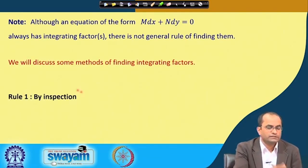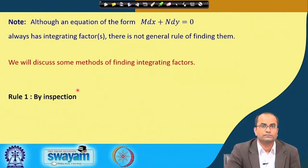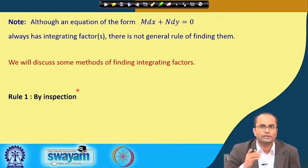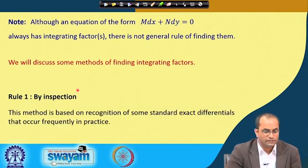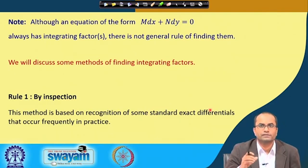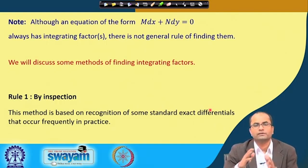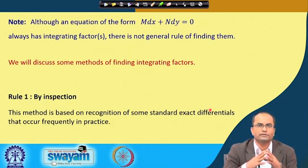Rule number one is by inspection — the most straightforward but also most challenging approach, because it is essentially a guess: looking at the differential equation and determining what function to multiply so it becomes exact. However, it is also difficult because it is not a systematic approach. This method is based on the recognition of some standard exact differentials. If we know certain standard differentials, we can look at the differential equation and recognize that by rewriting or multiplying/dividing by some function, we obtain exactly the differential of one of those standard functions.